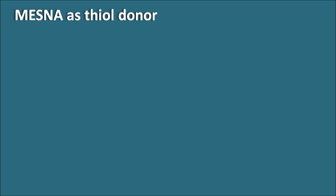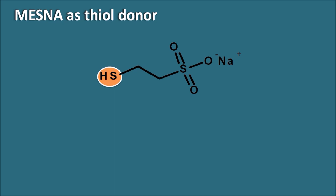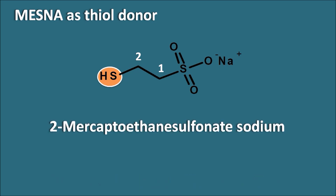Mesna acts as a thiol donor. It has a mercapto group which acts as a thiol donor. Numbering from the sulfoxide: one, two — it has two mercapto groups. The name of mesna is 2-mercaptoethane sulfonate sodium. Mesna is used to prevent the bladder toxicity caused by cyclophosphamide. In summary, cyclophosphamide produces two components — phosphoramide mustard and acrolein — but phosphoramide mustard is mainly responsible for the alkylation of the DNA.